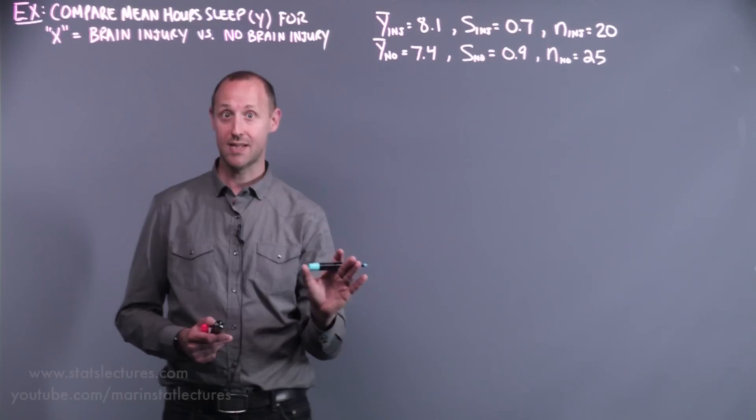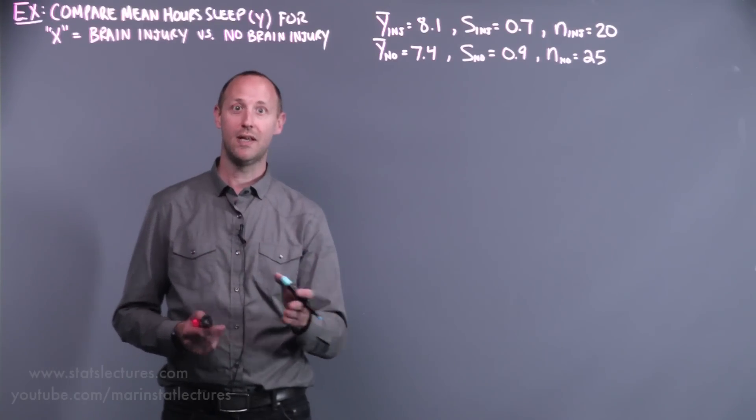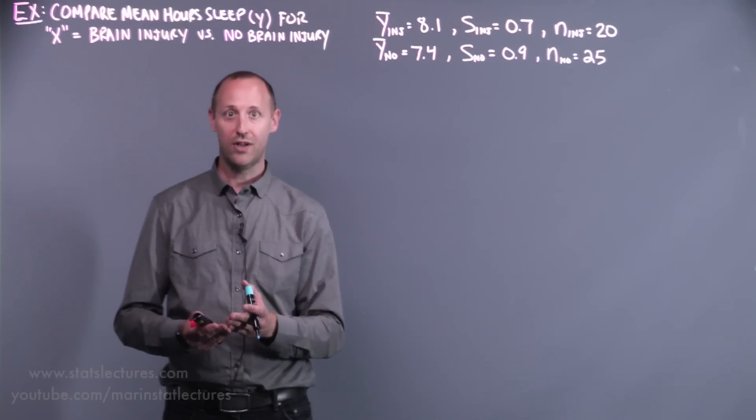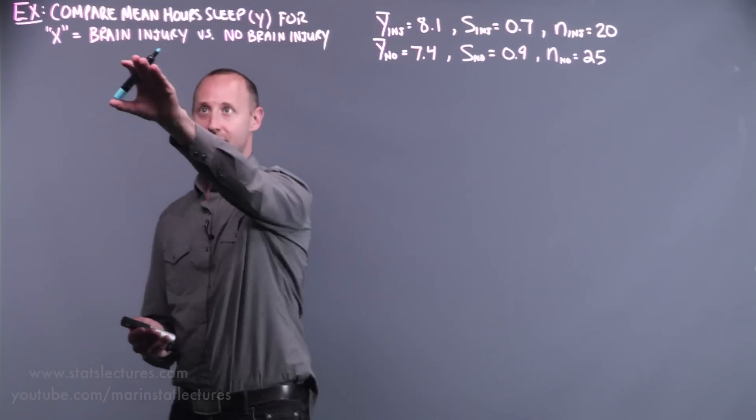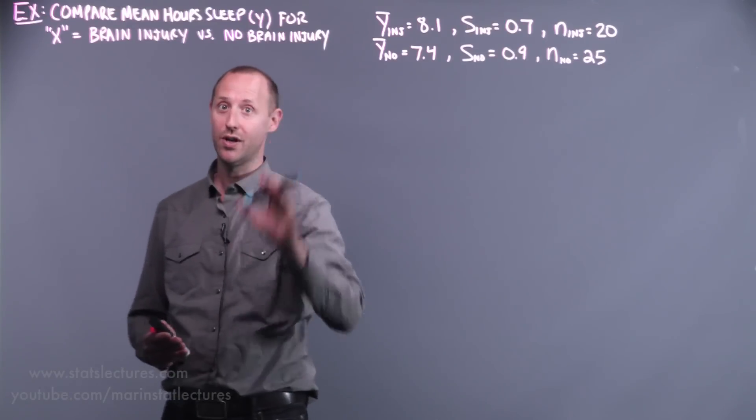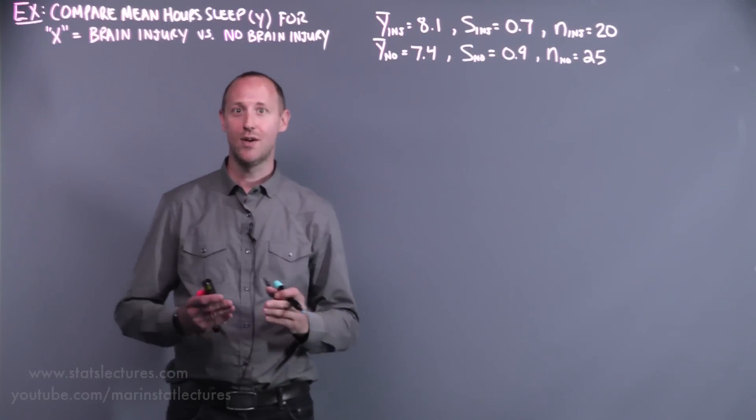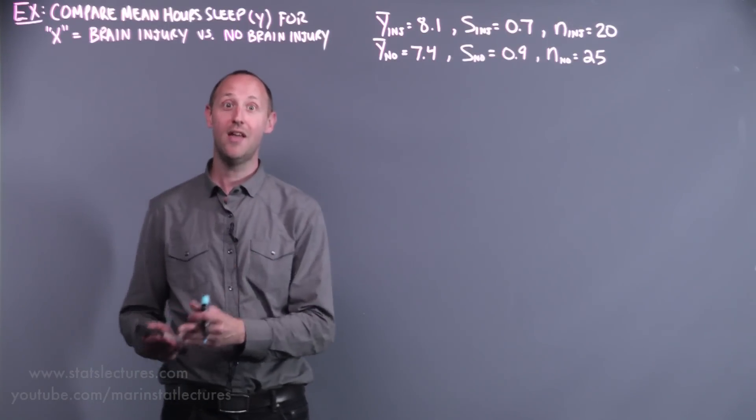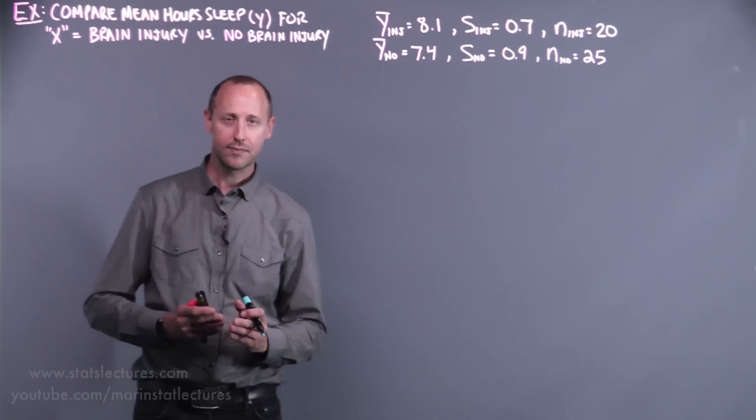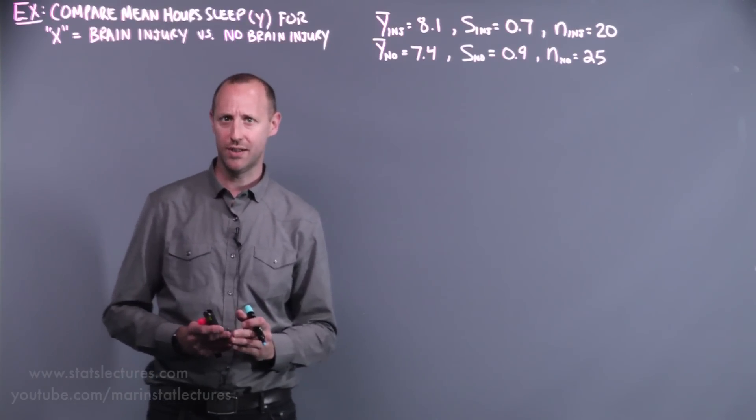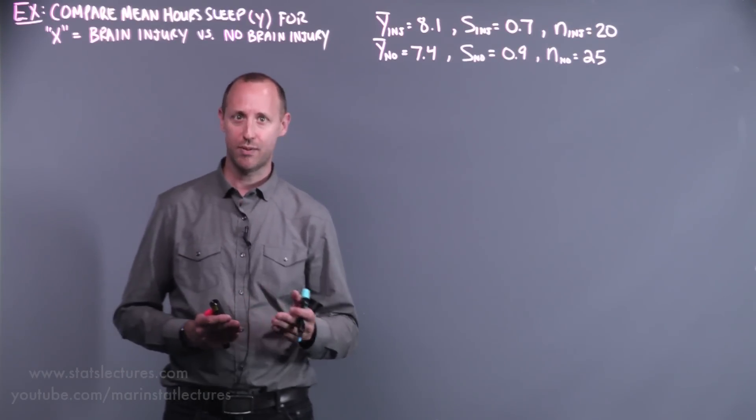The nice thing with pairing is that we can have the two groups being identical or nearly identical other than the value of x, the injury or non-injury. In this case, we obviously can't have someone being in the brain injury and the non-brain injury group. So we have other ways of trying to deal with this, and we'll explore them as we progress.